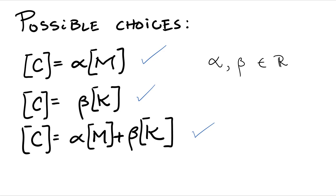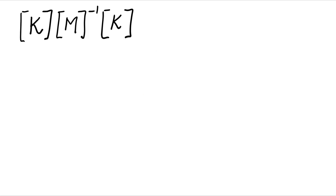And these are the so-called Rayleigh damping. But there are also other choices that make the matrix diagonalizable. For example, if you pick the damping matrix as K M to the minus one times K, this is a possible choice that also diagonalizes the matrix. And let's see that.